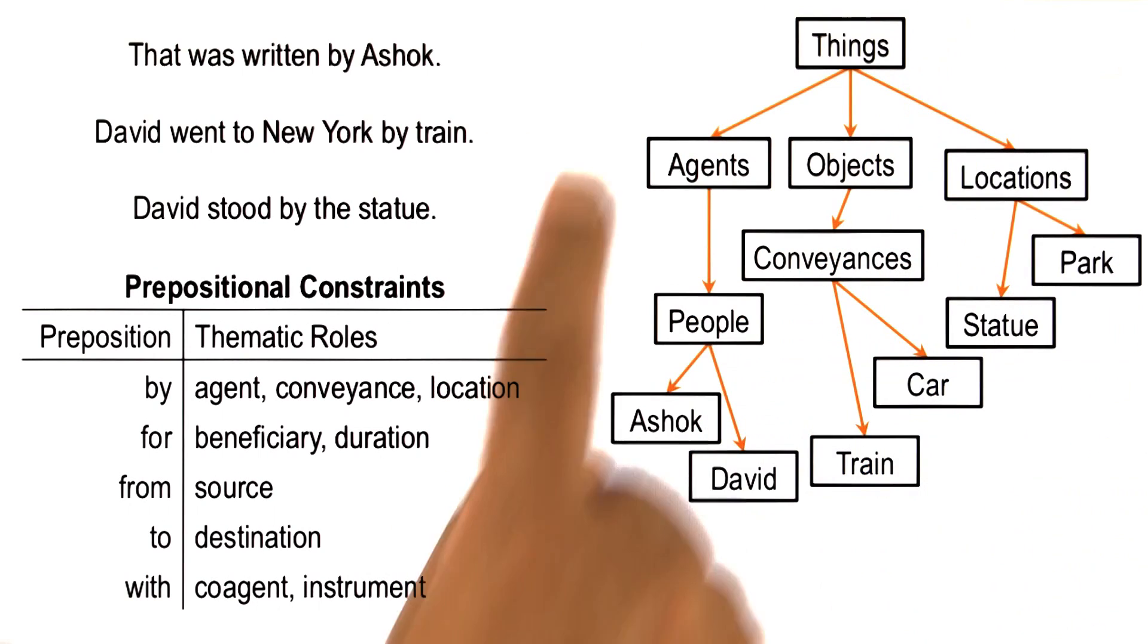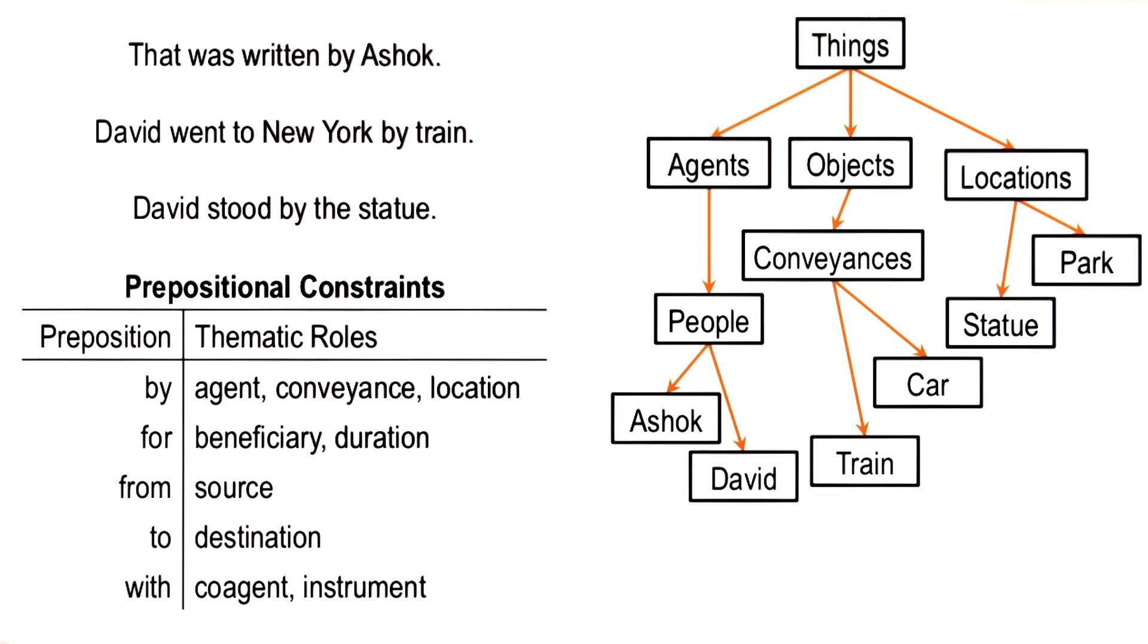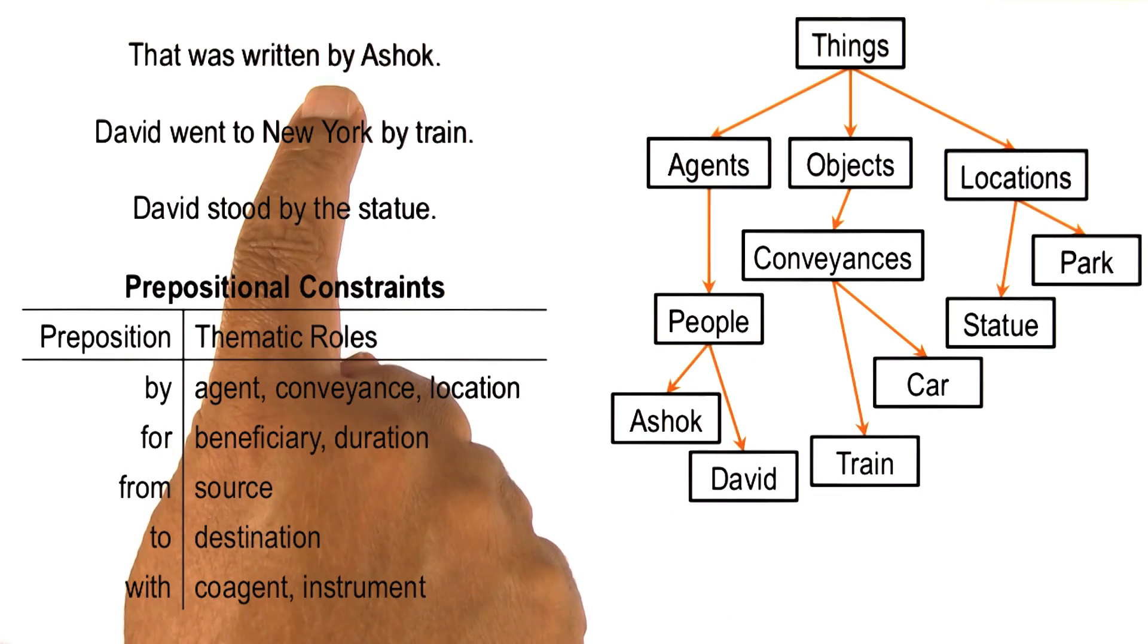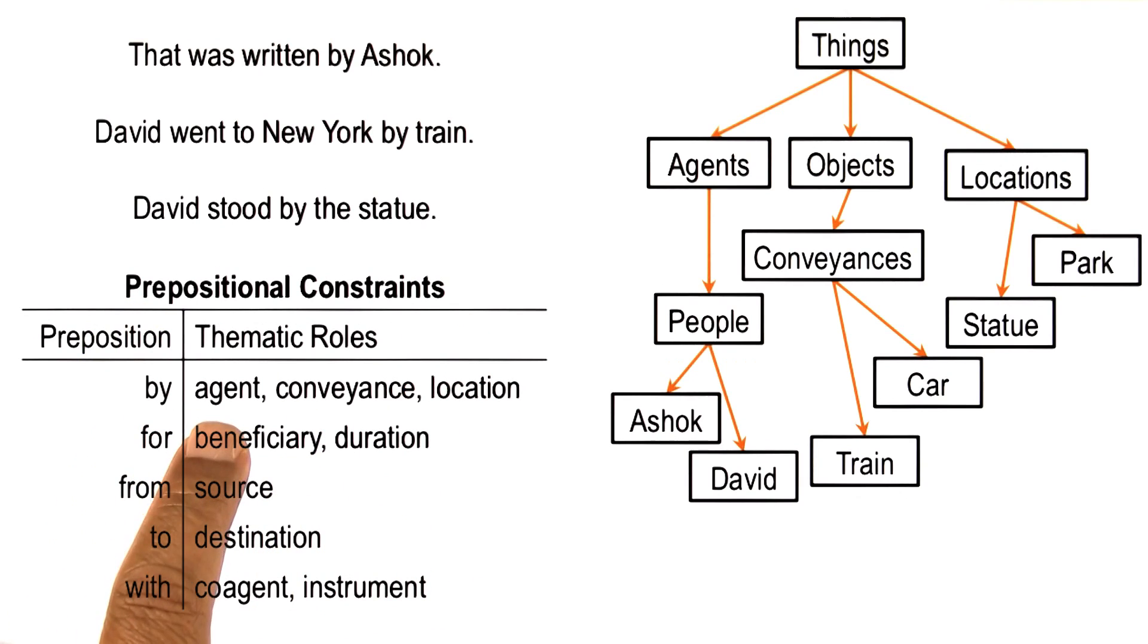Now this ontology helps us decide that Ashok in the first sentence is an agent. Let's see how. Here we have by Ashok, and we know from the propositional constraints that by can refer to an agent, conveyance, or location. So the question now becomes, is Ashok an agent,